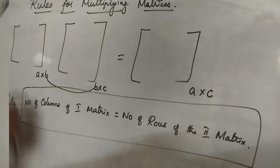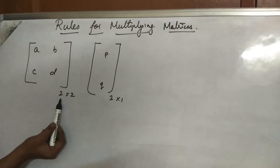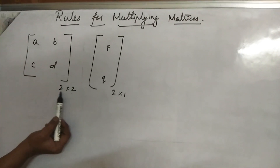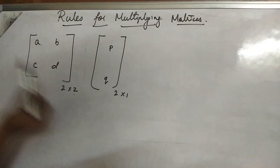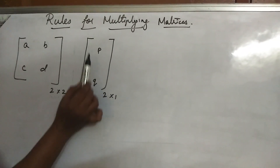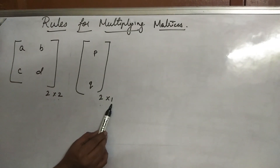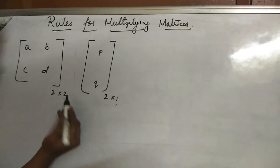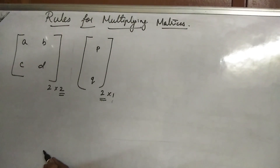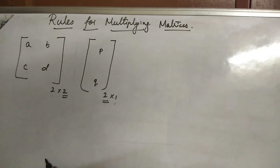Now, the first matrix has elements A, B, C, D — how many rows? Two. How many columns? Two. So, two by two. The second matrix has two rows and one column — so 2 by 1. Now check: number of columns of first matrix equals number of rows of second matrix? Yes, both are 2, so we can multiply.